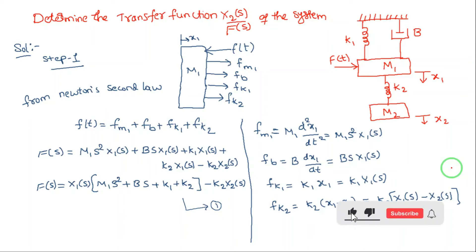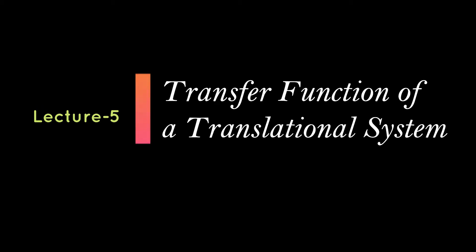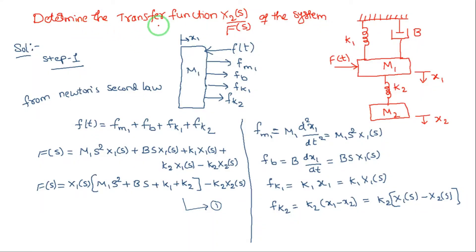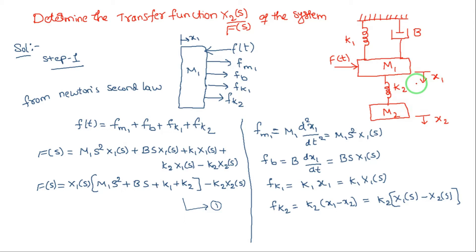Hello everyone. Now I will tell you how to solve a transfer function for a given translational system. The question asks to determine the transfer function x2(s) by F(s) of the system. Specifically asking to find x2(s) by F(s) because x2(s) is the output and F(s) is the input.